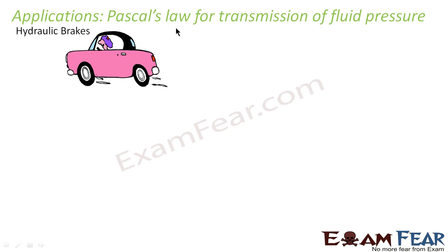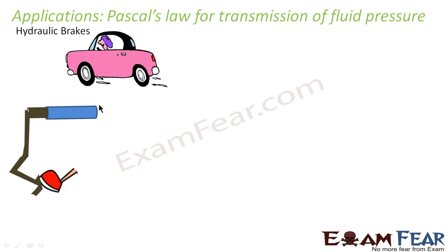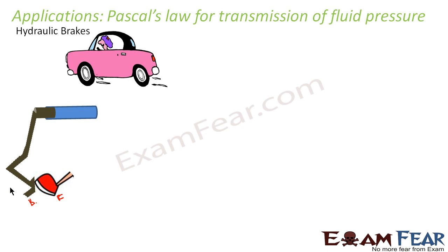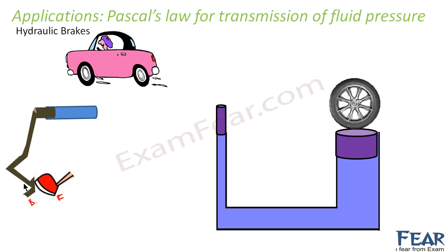So basically what happened — what did you do to stop the car? Let us suppose this is your foot and this is the brake pedal. So what you did is you applied a force on the pedal, and the car stopped. Now what was the mechanism inside this? This is a rough diagram which shows the mechanism. Just have a very clear look.